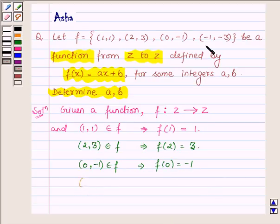And last, the ordered pair (-1,-3) also belongs to f. This implies f(-1) = -3.